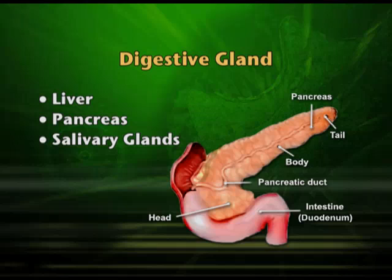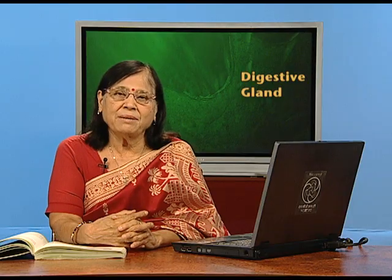Coming to the pancreas, which is another important digestive gland in our body. It is situated in the duodenum, or between the two limbs of the duodenum. It is a very delicate but very important organ. It is a mixed gland with both exocrine and endocrine functions, and is sometimes called a compound gland.